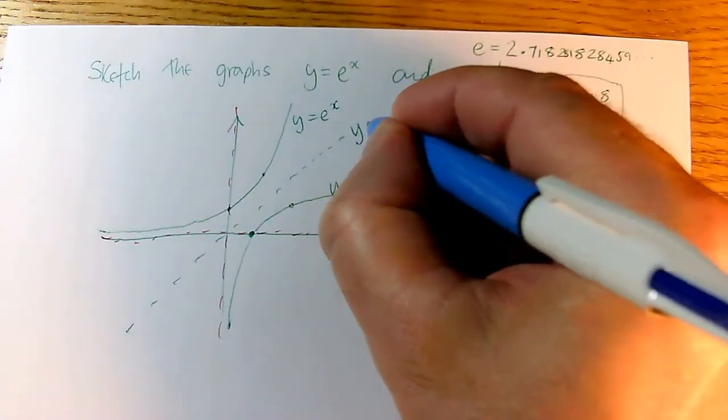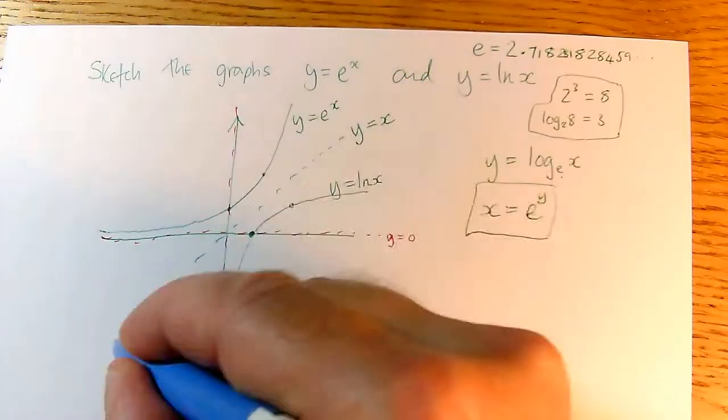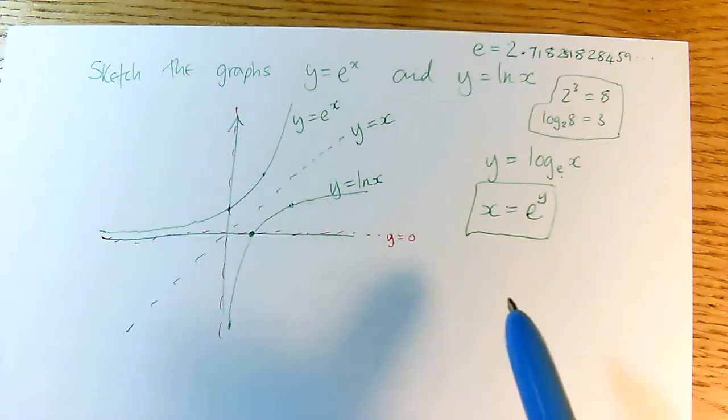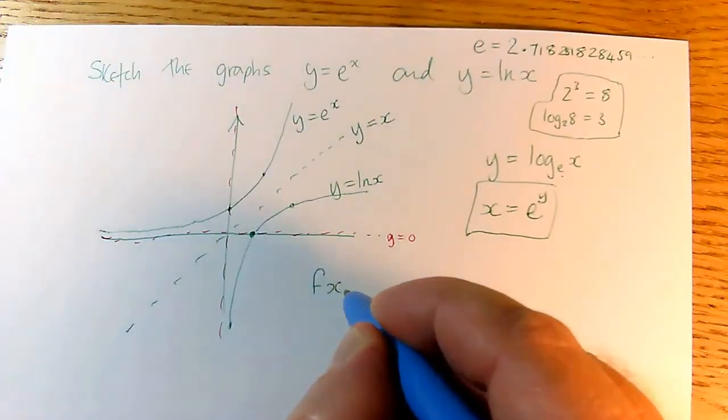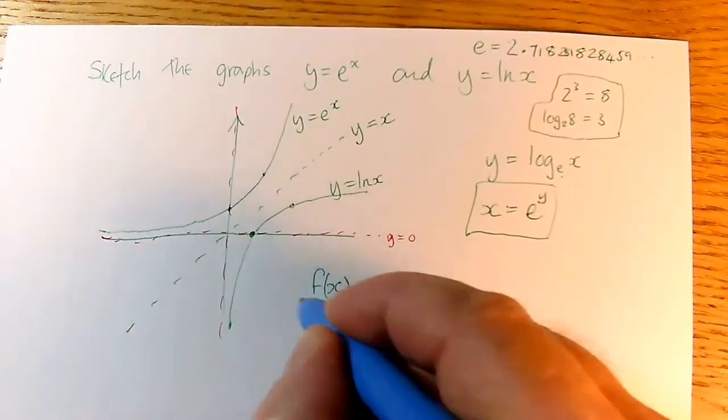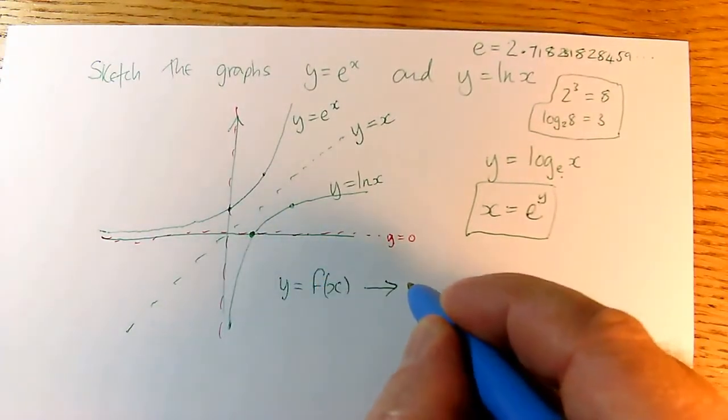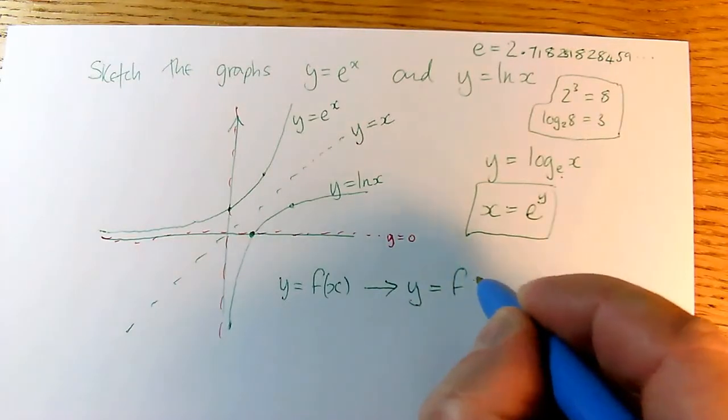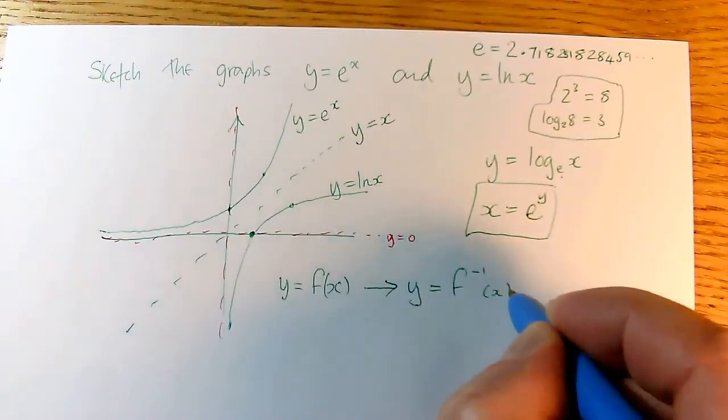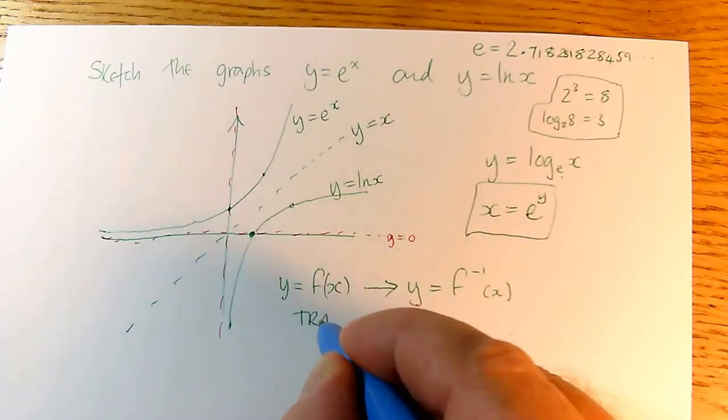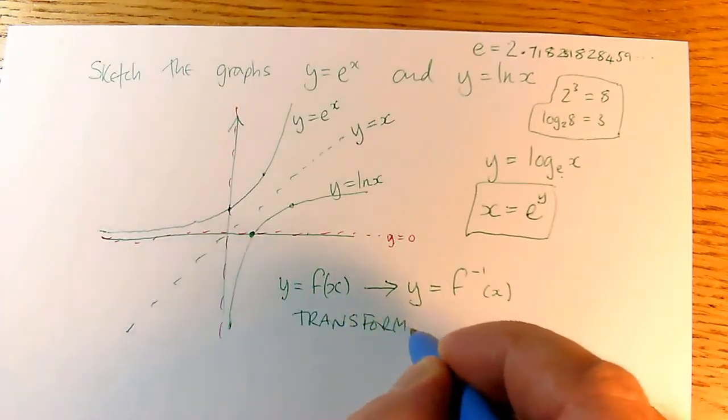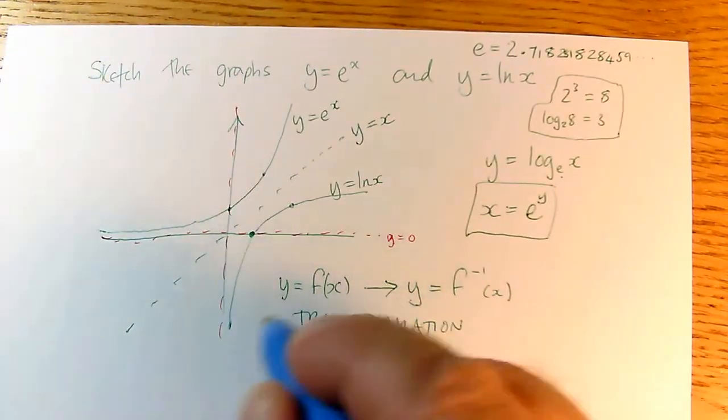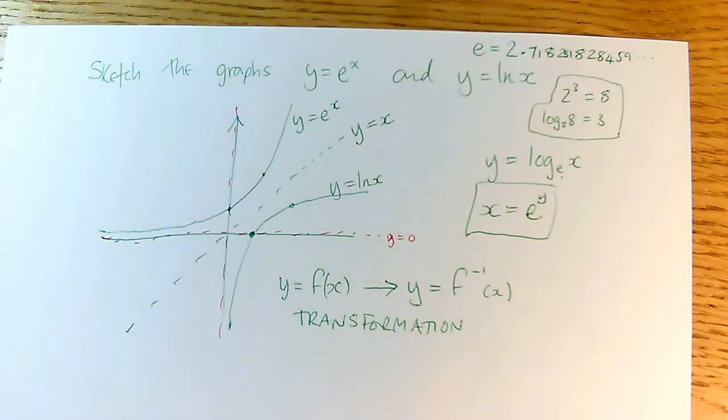This is y equals x, the dotted line. And so if I ever go from a function f of x, so y equals f of x I should say, to the graph of its inverse function y equals f inverse of x, the transformation for that is a reflection in the line y equals x.